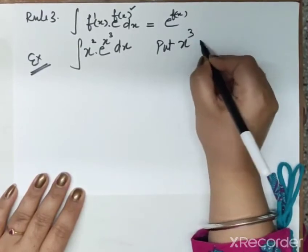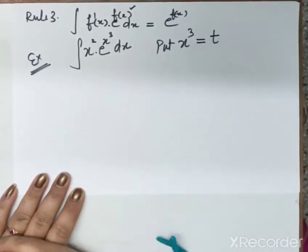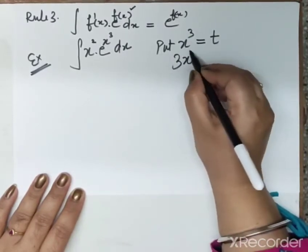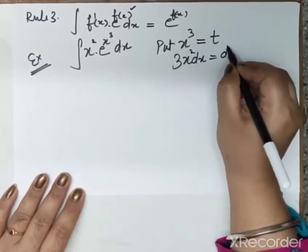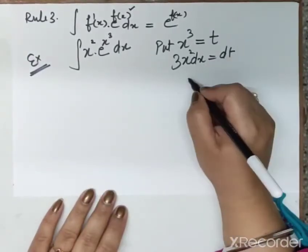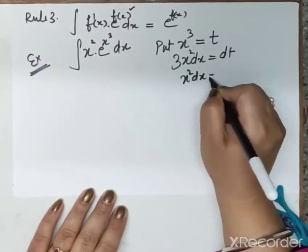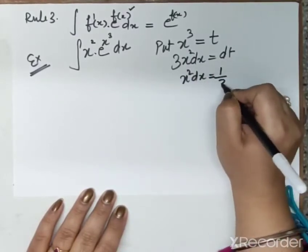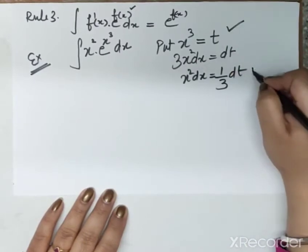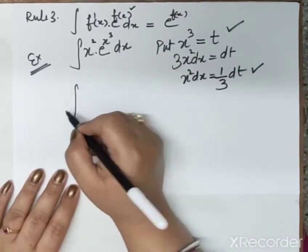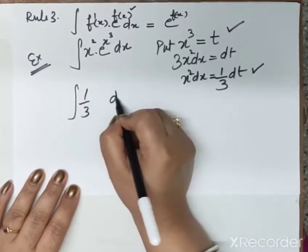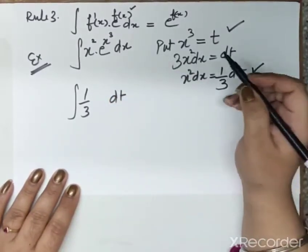The steps are the same. Put x³ = t. Second step: take the derivative of the whole expression, giving 3x² dx = dt. We need x² dx, so bring 3 to the other side: x² dx = (1/3) dt. In place of x² dx write (1/3) dt, and e^(x³) becomes e^t.